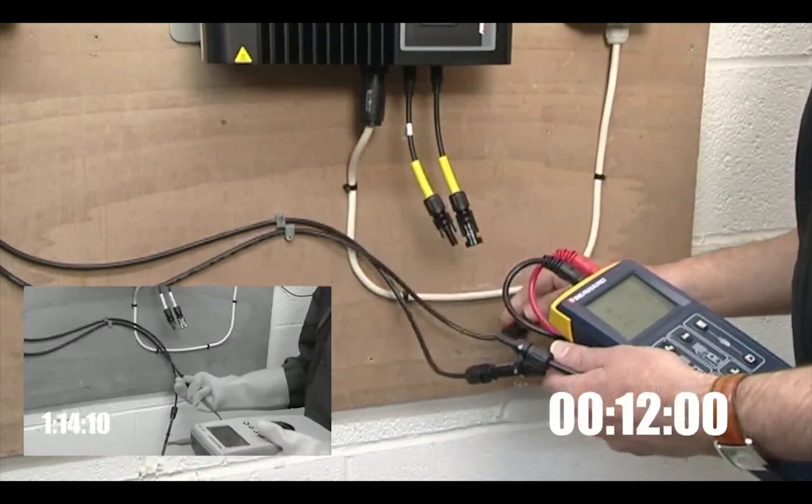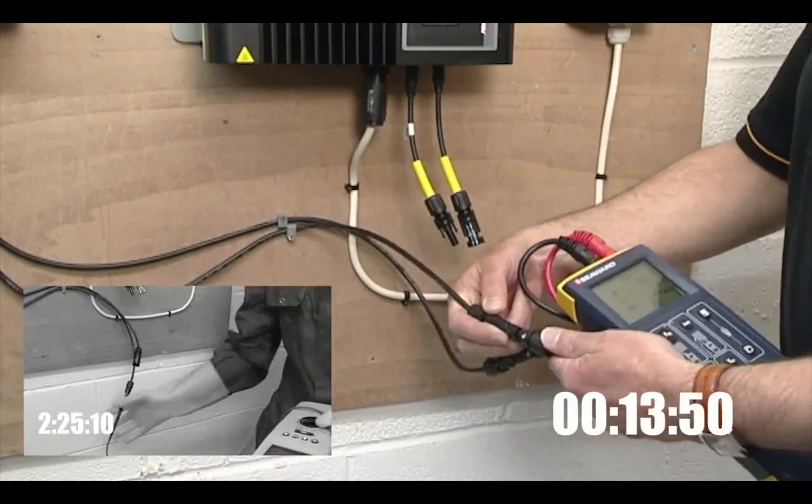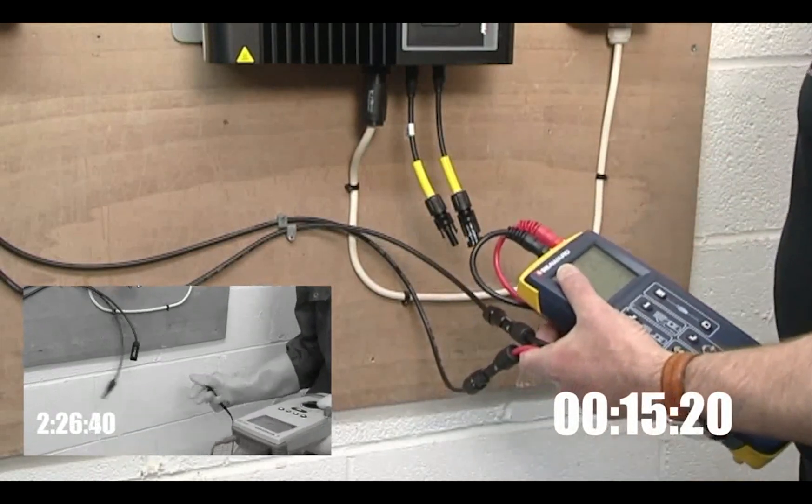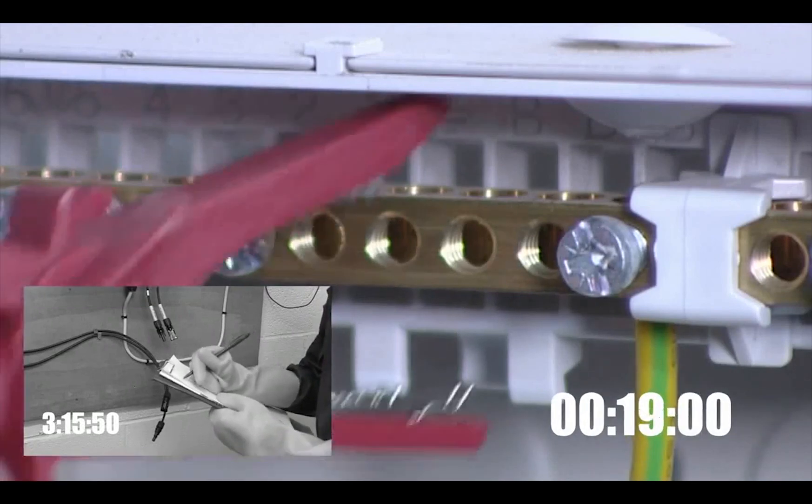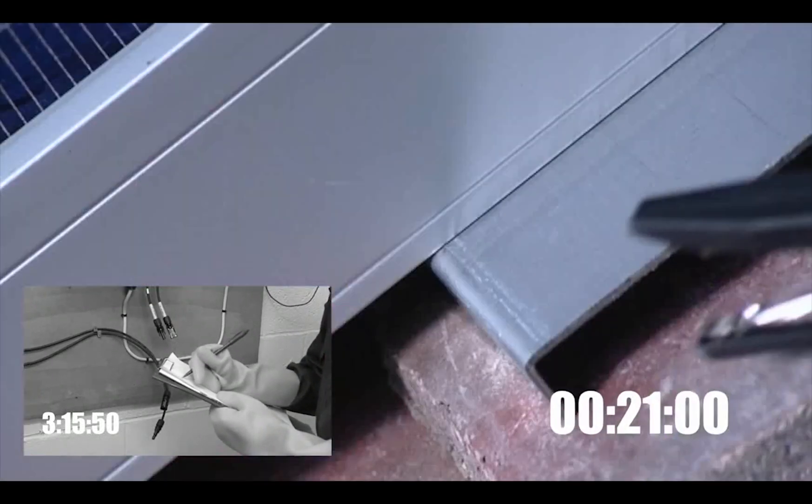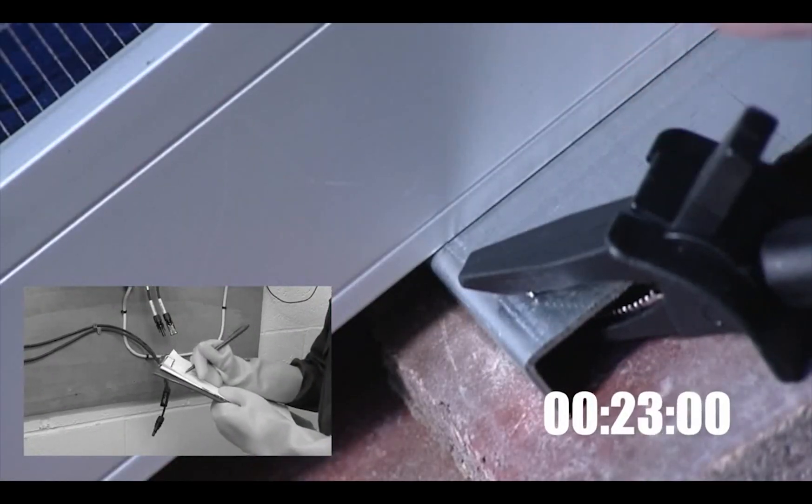In the small screen we're using an insulation tester for the open circuit voltage test. It's taken over three minutes to complete. Attach the crocodile clips to the earth and to the metalwork of the array and that's just over 20 seconds.